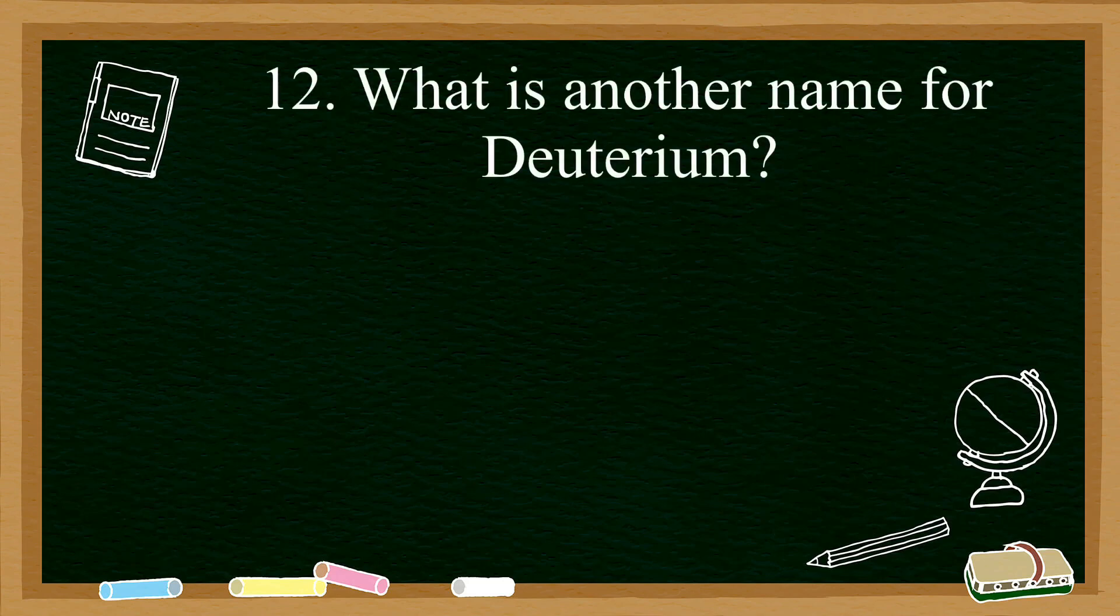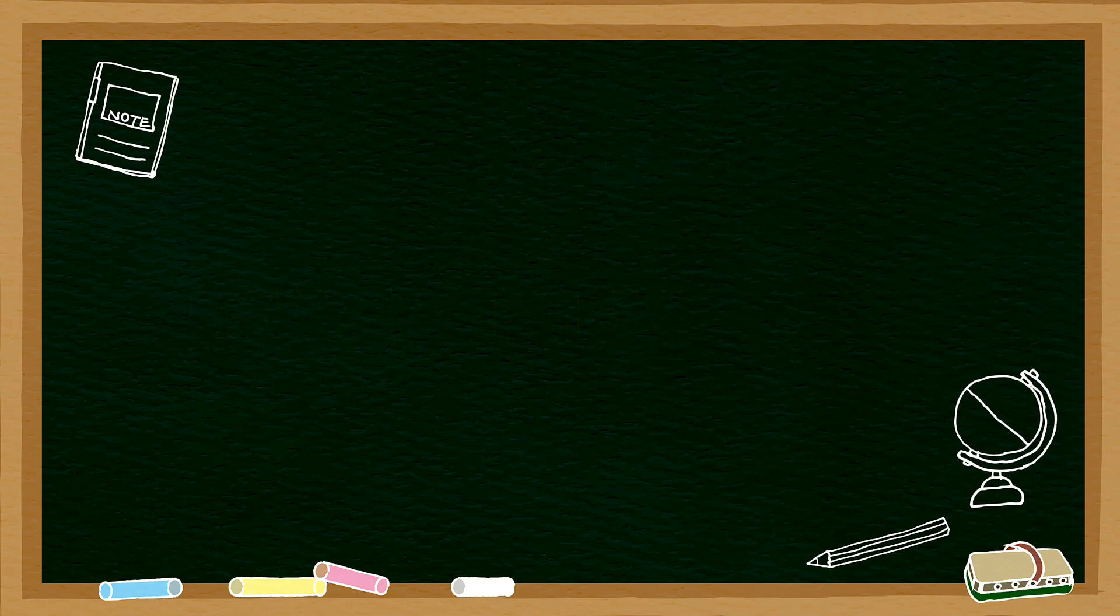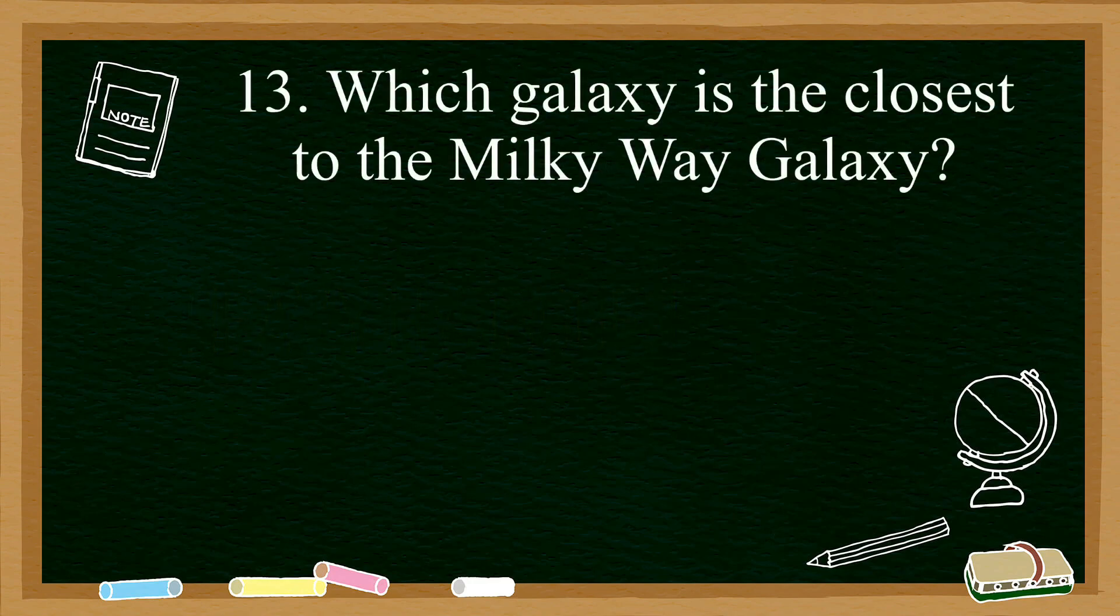The other parts are the white and red blood cells and the platelets. Number twelve: what is another name for deuterium? Deuterium is also known as heavy hydrogen because of the existence of an extra neutron in its atomic nucleus.